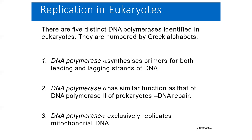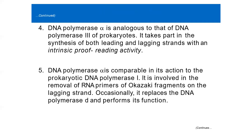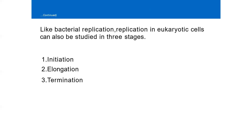Occasionally, DNA polymerase epsilon replaces DNA polymerase delta and performs its function. Like bacterial replication, replication in eukaryotic cells can also be studied in three stages: number one, initiation; number two, elongation; and number three, termination.